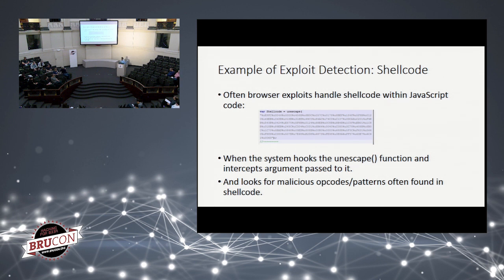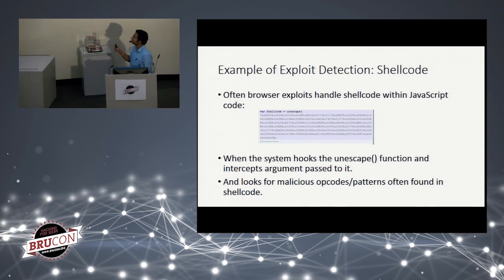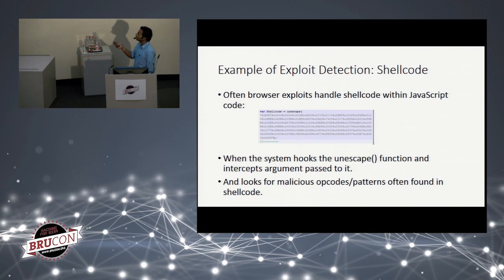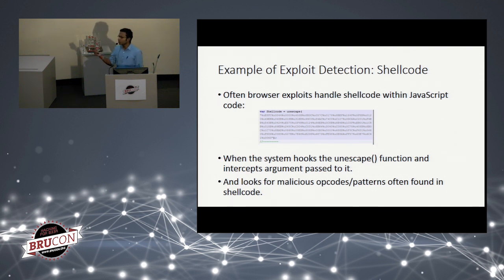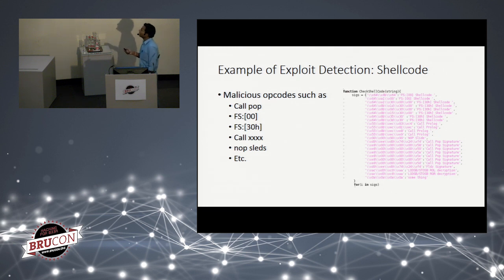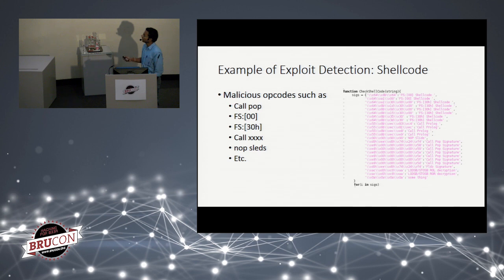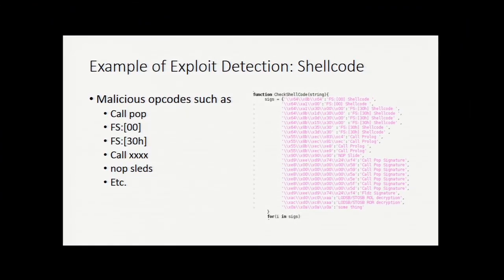Browser exploits often handle shellcode using the unescape function. When our unescape hook is installed in the browser, we look for different malicious patterns in the string passed to unescape. For shellcode detection, we look for op-codes of call/pop instructions — instructions very often used in shellcode for resolving module bases like kernel32 — as well as NOP sleds and other call instructions. We look for all these tokens to identify shellcode.